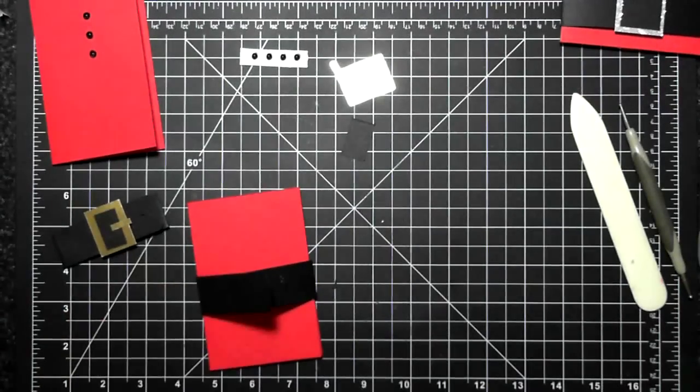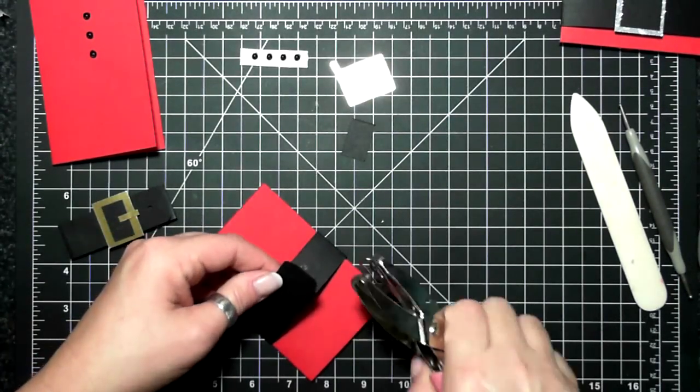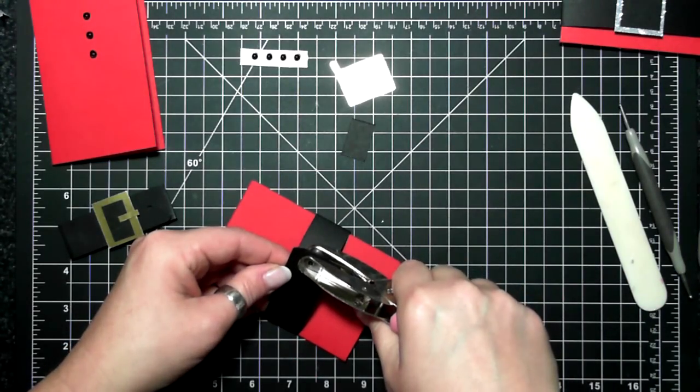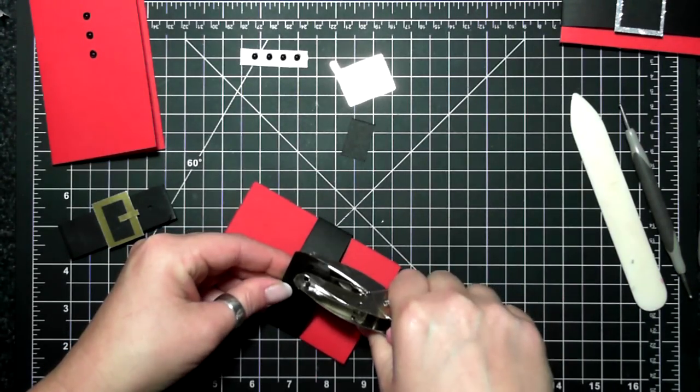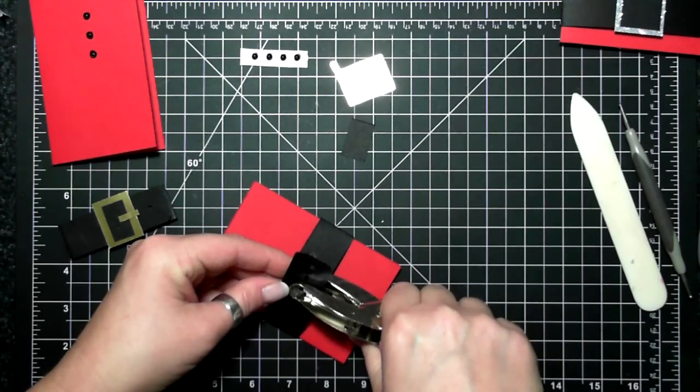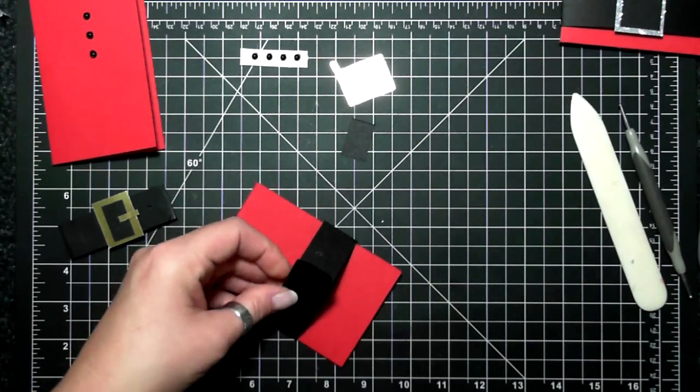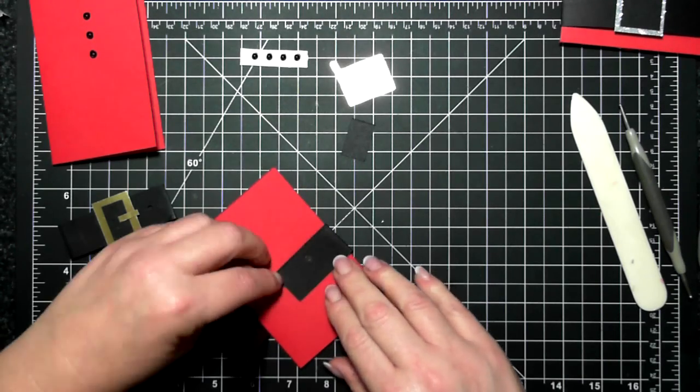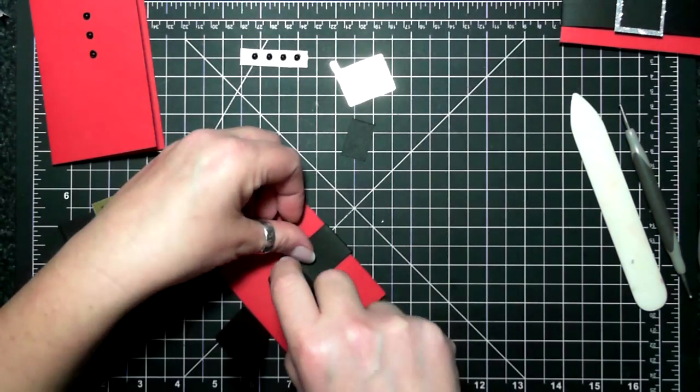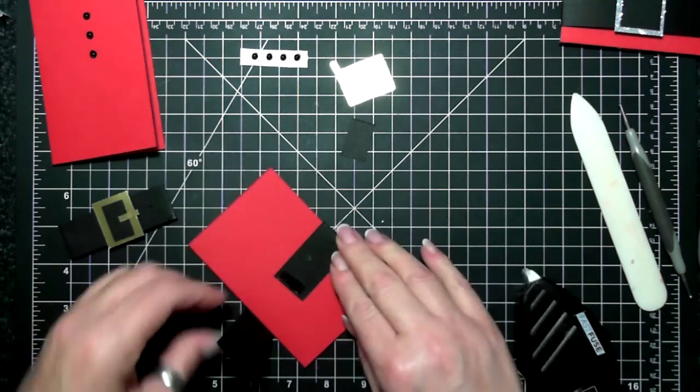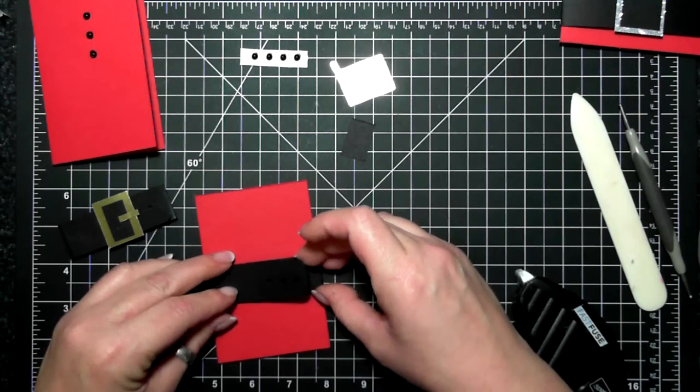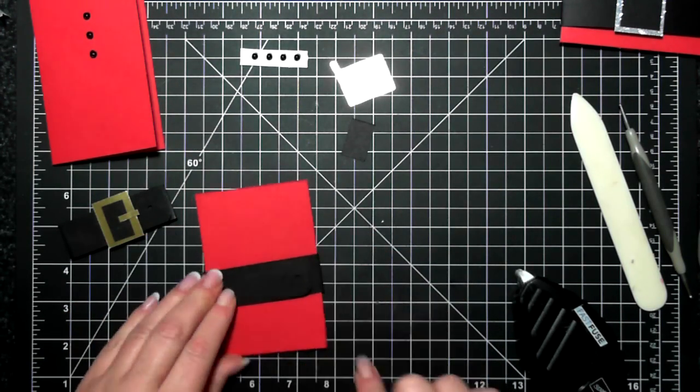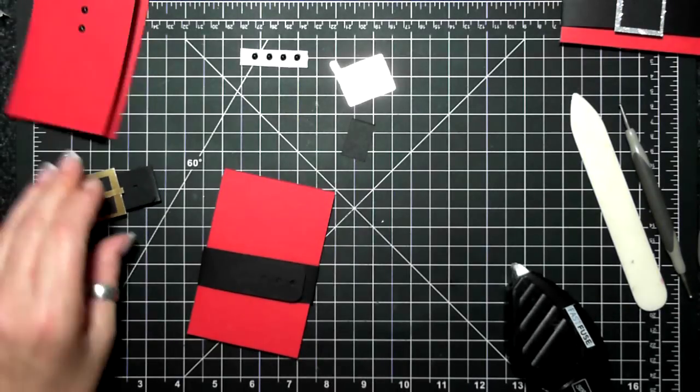And then I used a hole punch, and this is just a regular hole punch, nothing spectacular. I put about three in there. Okay, so I'm going to just use a little bit of fast fuse to close that belly band together. And then whoopsies.